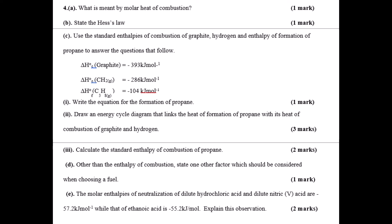Part E: you're given the molar enthalpy of neutralization of nitric acid and HCl is -57.2 kilojoules per mole, but that of ethanoic acid is -55.2 kilojoules per mole. Explain the difference.